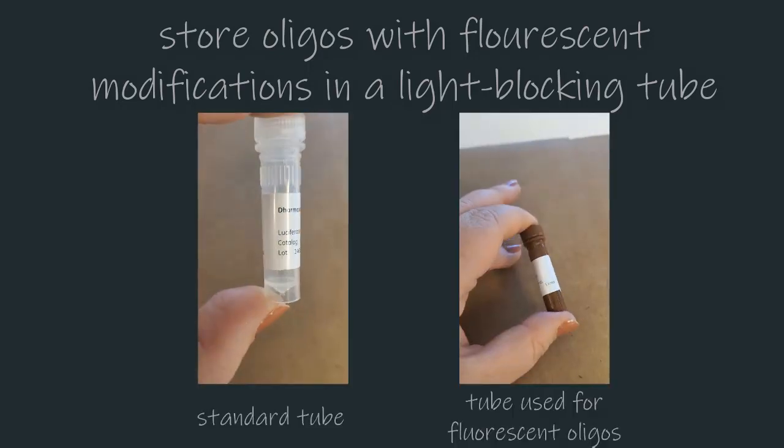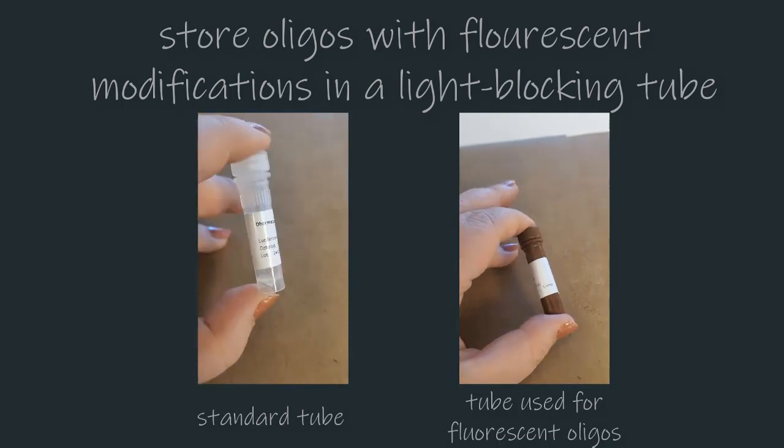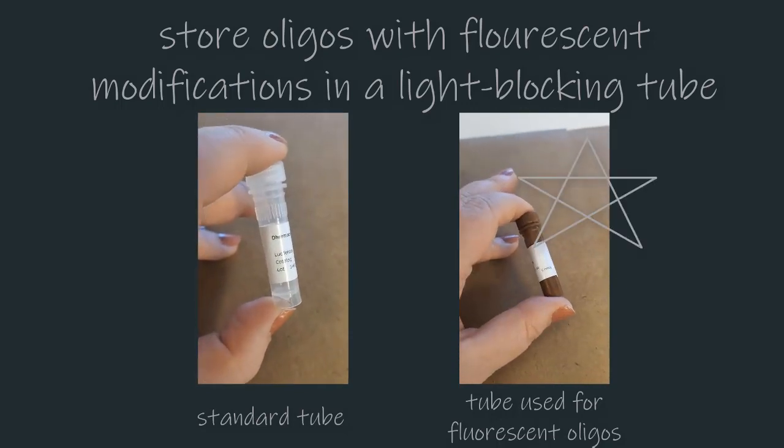For modified oligos, particularly those with fluorescent modifications, we recommend storage in a tube that blocks light to avoid bleaching effects.